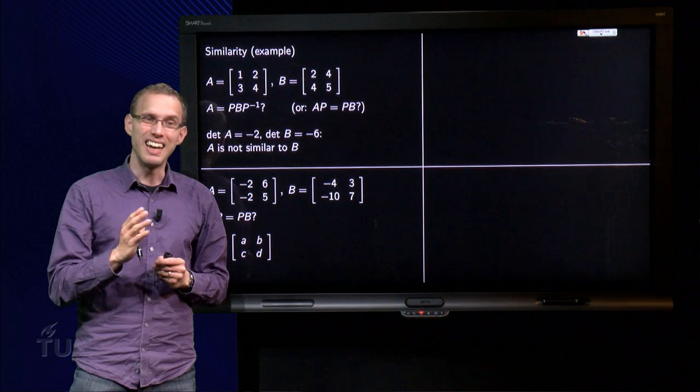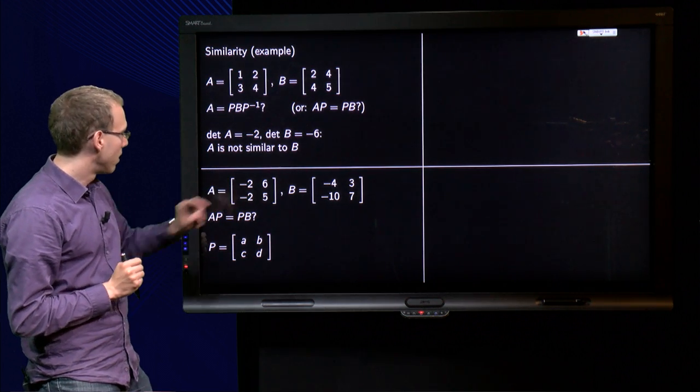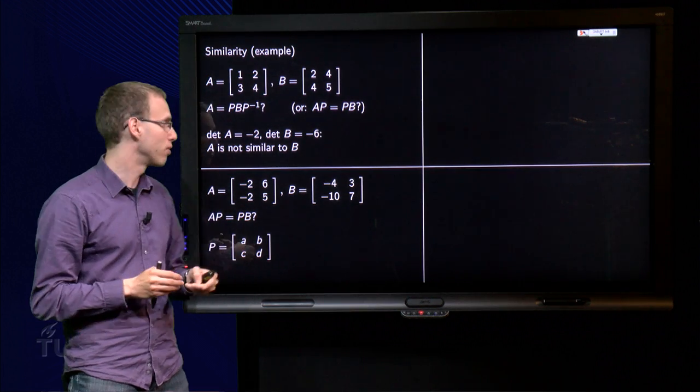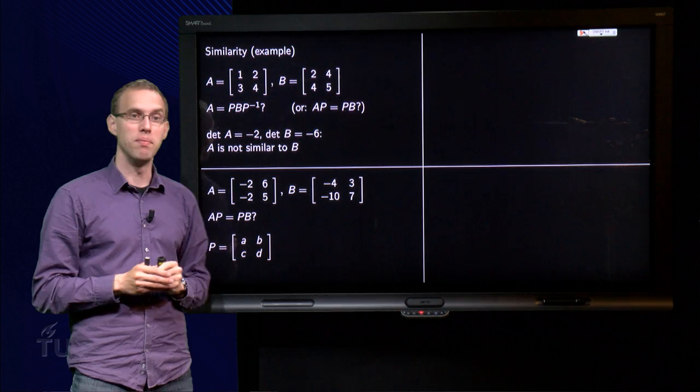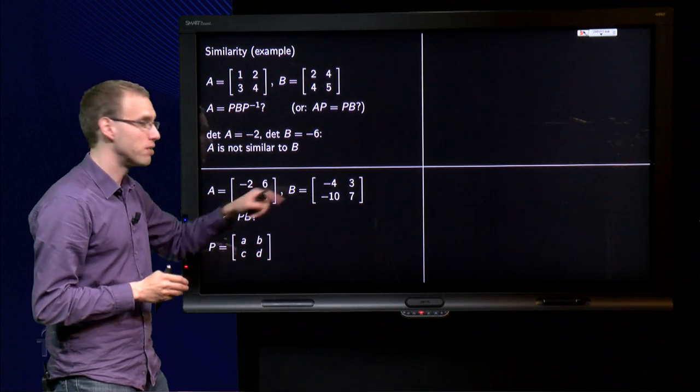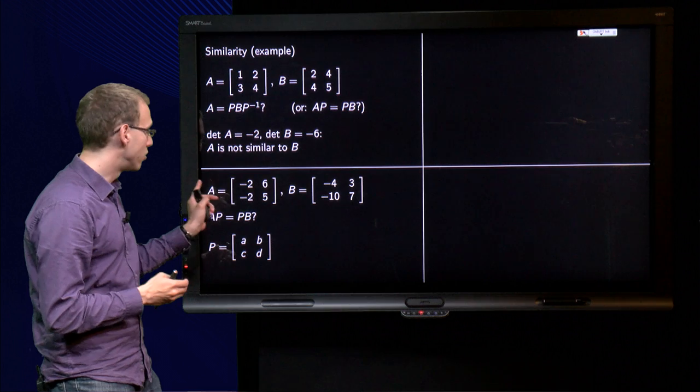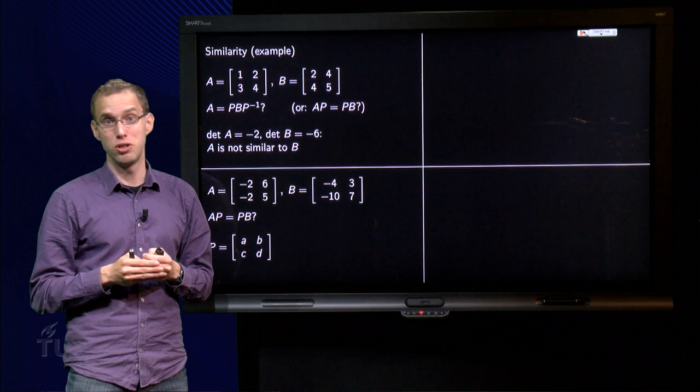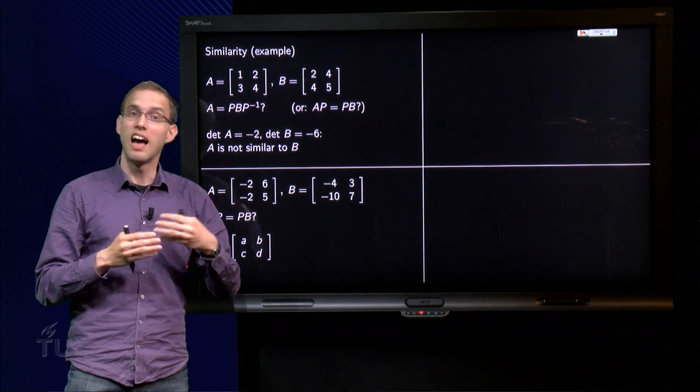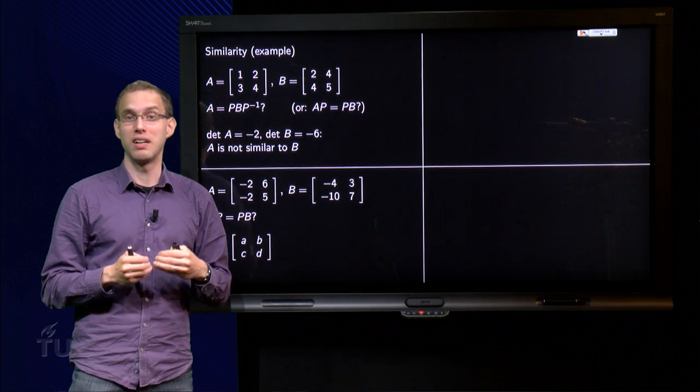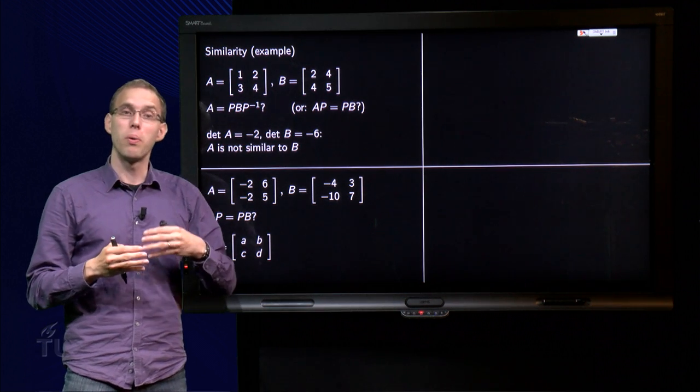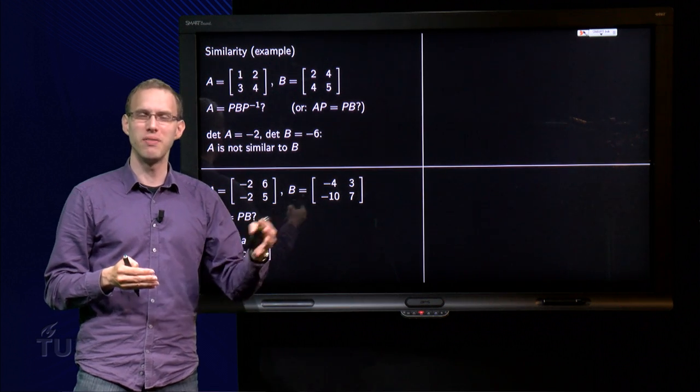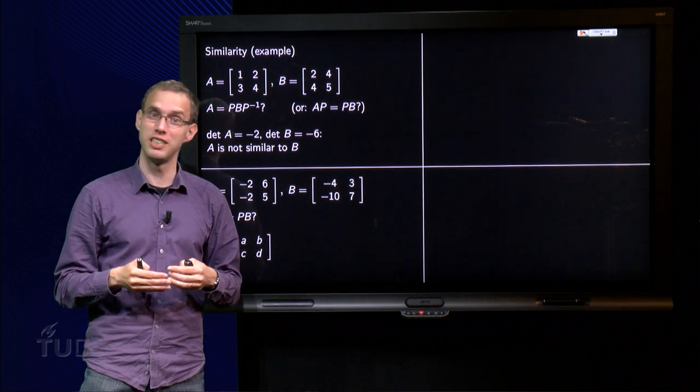Let's look at the next example, A and B over here. Det A equals minus 10 minus minus 12 equals plus 2, and here we have minus 28 minus minus 30, so plus 30 equals 2. So the determinants are the same. So in this case, it could be that A is similar to B. But how are we going to figure that out? One way to do this, which you can do for 2 by 2 matrices, and you will see why it's not so convenient for larger matrices as well.